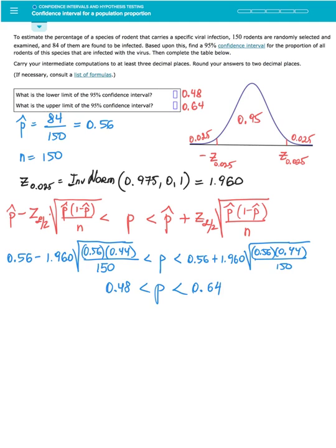Now it is time to construct the interval using a formula where my true proportion p will be estimated by using the point estimate p-hat. And I subtract on the left and add on the right the margin of error which is computed by taking critical value and multiplying by the square root of p-hat times 1 minus p-hat divided by sample size n.